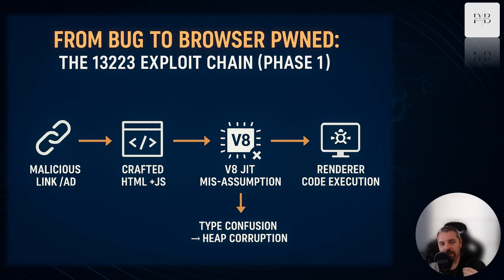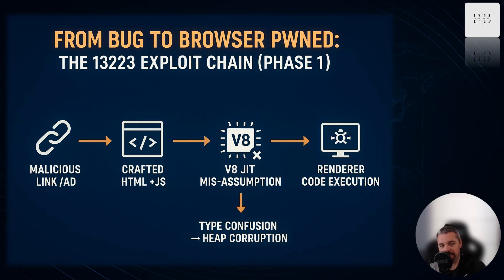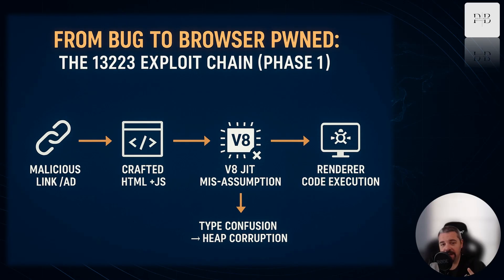Here's the phase one chain attackers use. Step one: deliver a malicious link — phishing email, WhatsApp message, malicious ad, compromised website. Step two: serve a page containing highly optimized JavaScript that first warms up V8, then flips the type assumptions. Step three: force the type confusion, corrupt the heap, obtain arbitrary read/write. Step four: pivot to renderer-level code execution. At this stage, the attacker controls your browser, but still inside the sandbox.